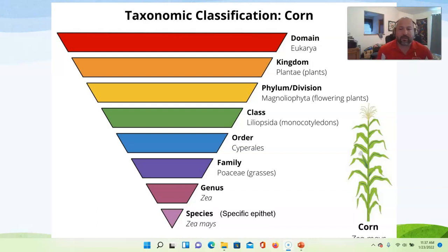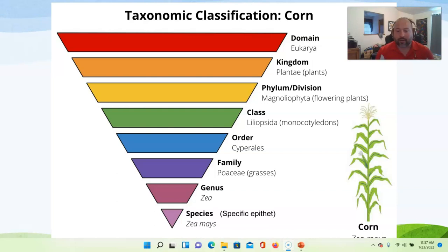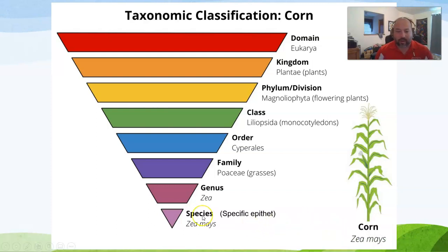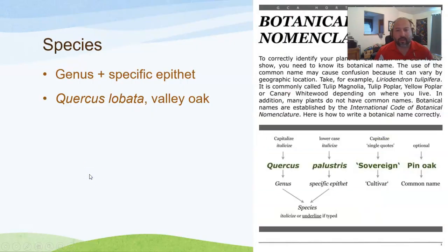For corn, we go: Kingdom Plantae, Phylum Magnoliophyta (flowering plants), Class Liliopsida (monocotyledon), Order Cyperales, Family Poaceae — the grass family — Genus Zea, and the full species name is Zea mays. That's how we work our way down from kingdom all the way to the species level.